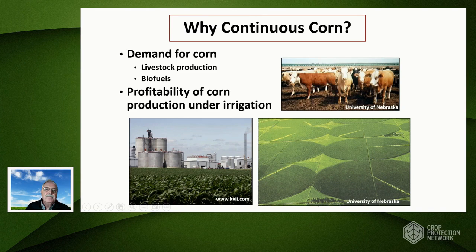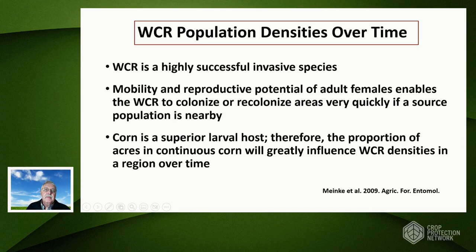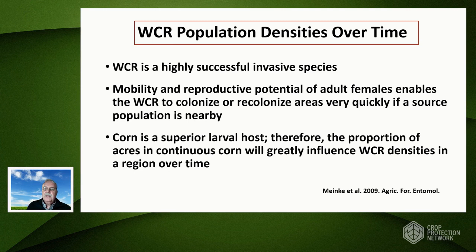The Western corn rootworm is a highly successful invasive species that can move over large geographic areas. Movement also occurs annually at a very local scale. Beetles are very mobile and females have very high reproductive potential — they lay lots of eggs — so they can colonize or recolonize areas very quickly if a population density is nearby. Corn is the superior larval host, and because of that, the proportion of acres in continuous corn will greatly influence densities in a region over time or on an individual farm.